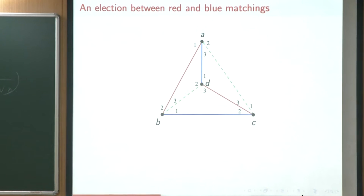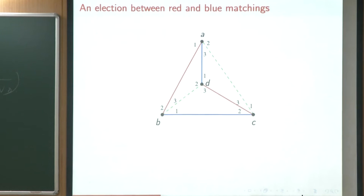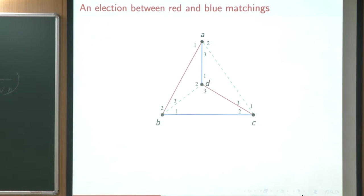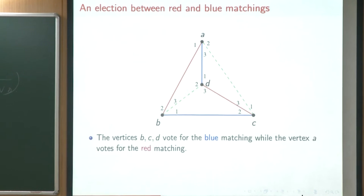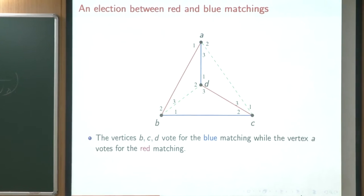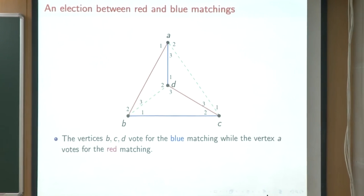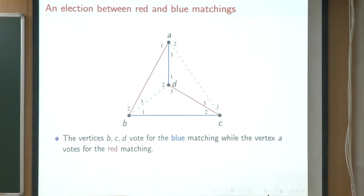Maybe I'll just show it by this example. We have two candidates here, the blue matching and the red matching. We ask every vertex: are you happier with the blue matching or the red matching? Every vertex just looks at its partner in the blue matching and its partner in the red matching — it's not concerned with what partners others have obtained. In this election between red and blue matchings, vertex A is happier with the red matching: it gets its top partner, whereas in the blue matching it gets its worst partner. However, the remaining vertices B, C, D prefer the blue matching — each of them gets a better partner in the blue matching.